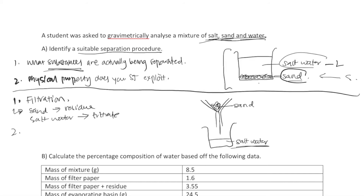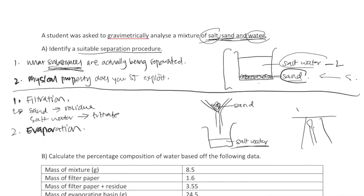The second step is separating salt from water. Salt is a solid and water is a liquid, but in this case salt is dissolved in water — a soluble solid in a liquid. For separating a soluble solid from a liquid, the main technique is evaporation. The setup includes a tripod, a bunsen burner, an evaporating basin, and the salt water mixture.